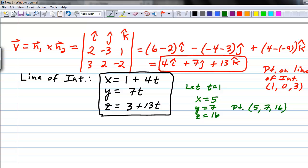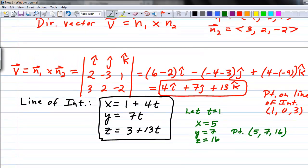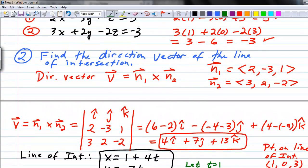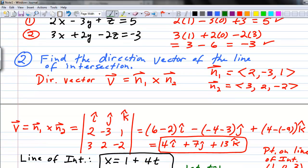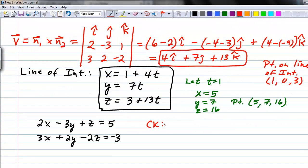All we have to do is check that this point is also going to satisfy both equations of the two planes above. To make it easier, I'm going to write them again down here. Here's our check. We've got 2 times x, which is 5, minus 3 times the y value, which is 7, plus 16, our z value. We want to know if it's 5. We're not going to assume that it is.